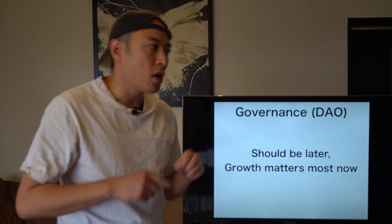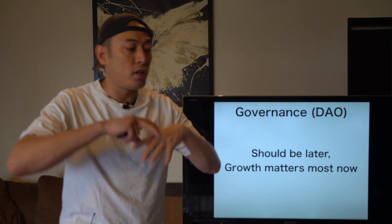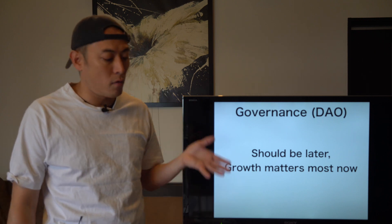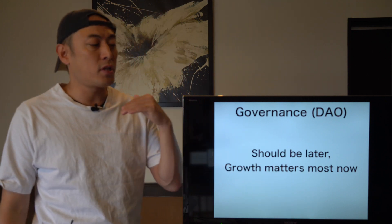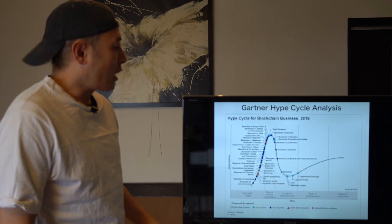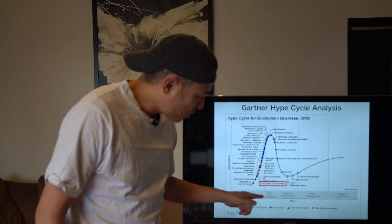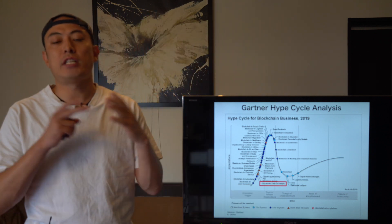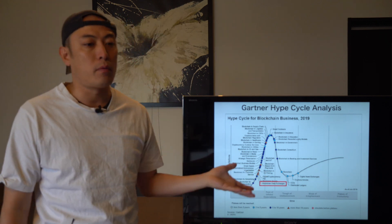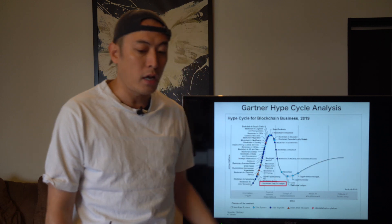On governance, NKN should focus on growth at this stage; a more decentralized governance model can come later. For the hype cycle analysis using Gartner's framework, NKN falls in the blockchain data exchange category — like the DEN token or data exchange models — which is at a very early stage. Unlike more mature crypto projects, they have a huge potential upside. Their focus on valid pain points in the data exchange market positions them well for long-term growth.